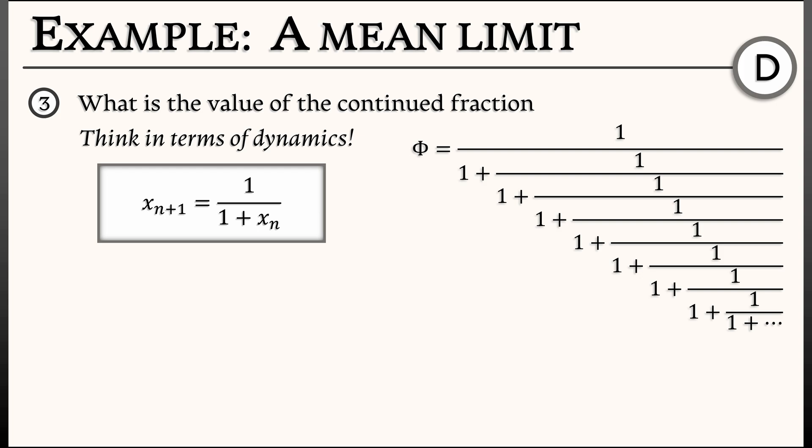Consider the discrete time dynamical system given by xn+1 = 1/(1 + xn). Choose an initial condition, and then just keep iterating over and over. And what we're going to get is something that hopefully converges to a stable equilibrium. And that would be the value of this continued fraction.